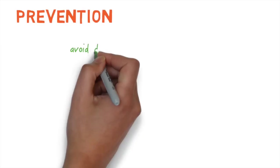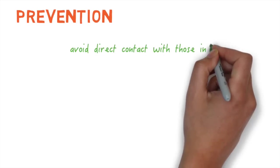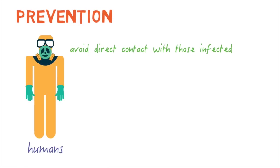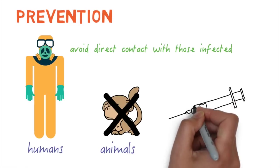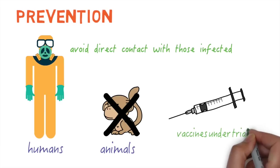Prevention of Ebola is by avoiding contact with the body fluids of those who are infected by Ebola. This includes both humans and animals. Although there is no vaccine against Ebola currently, there are a number of different vaccines that are under trial and are expected to be available in the future.